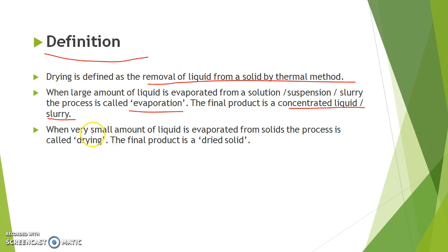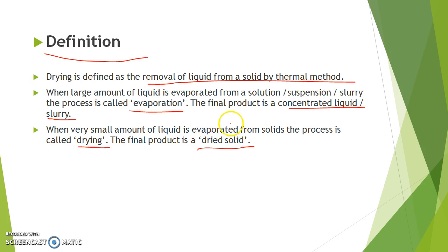But when a very small amount of liquid is evaporated from the solids, the process is called drying. The final product is a dried solid. After evaporation of liquid, when we get the product as a dried solid, the process is known as drying. When we get concentrated liquid as a product, it is called evaporation. This is the basic difference between drying and evaporation.